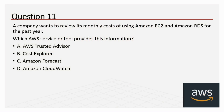Question 11: A company wants to review its monthly cost of using Amazon EC2 and Amazon RDS for the past year. Which AWS service or tool provides this information? The four options are: A) AWS Trusted Advisor, B) Cost Explorer, C) Amazon Forecast, and D) Amazon CloudWatch.